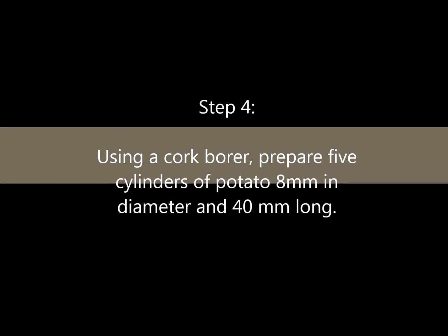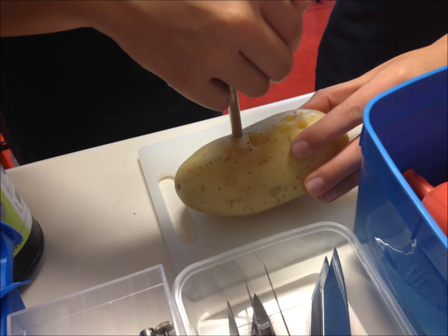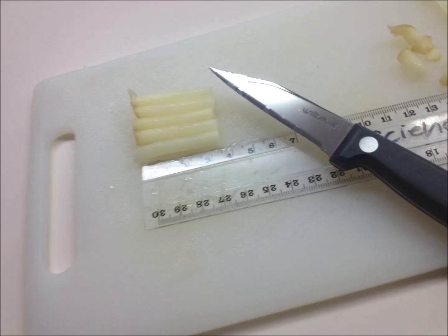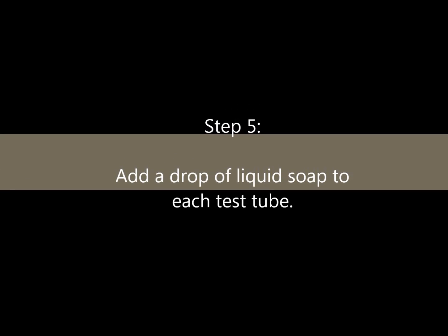Step 4: Using a cork borer, prepare 5 cylinders of potato 8mm in diameter and 40mm long. Step 5: Add a drop of liquid soap into each test tube.